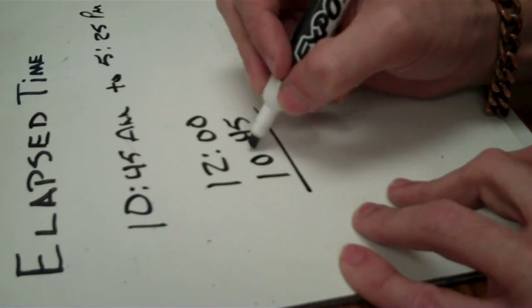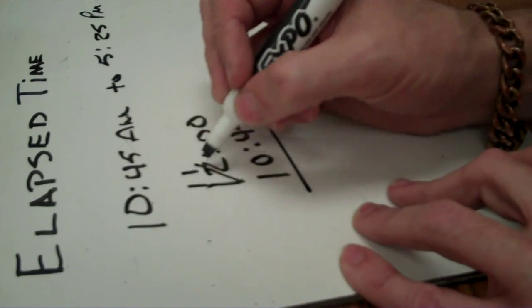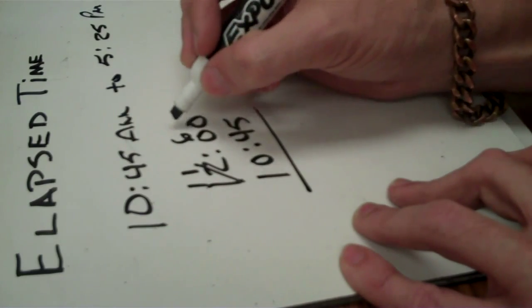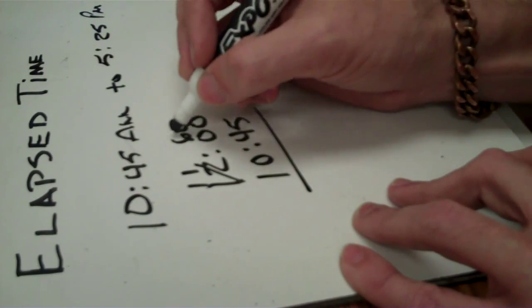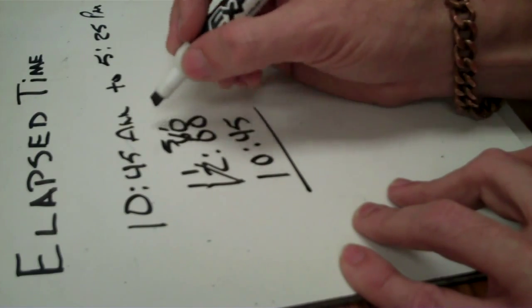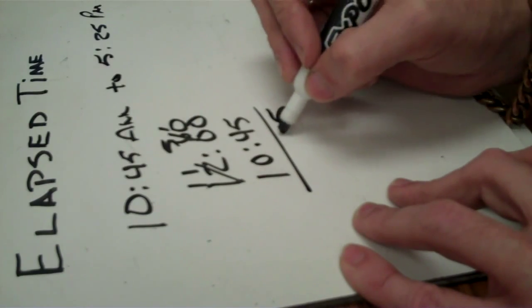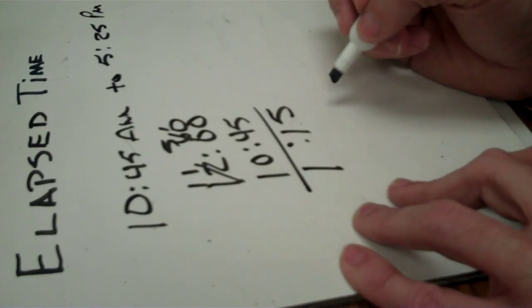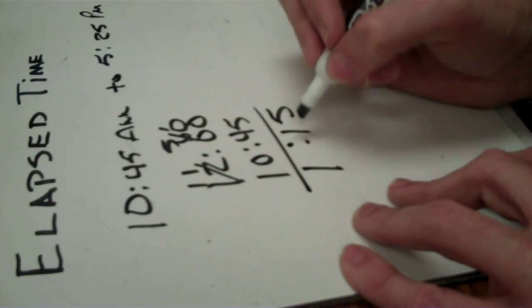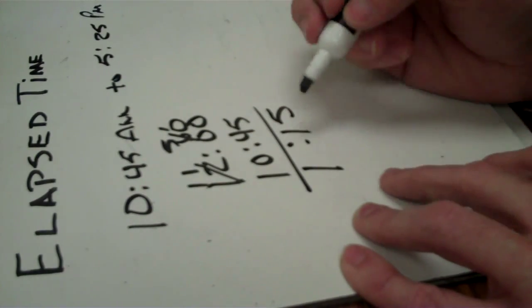Okay, again, we can't take 45 from 0, so let's borrow. And what did we borrow? We borrowed 60 full minutes. So now we can take 45 from 60. We have to borrow. 5 from 10 would be 5. 4 from 5 would be 1. And then 10 from 11 would be 1. So the difference to get from 10:45 to 12 o'clock is an hour and 15 minutes.